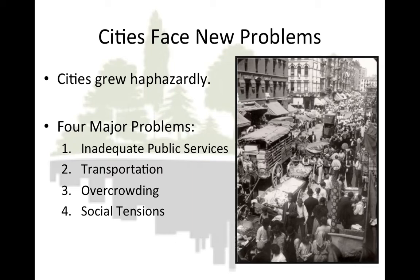Cities faced new problems. Urbanization led to physical changes in the landscape — trees and fields were replaced by wood and brick buildings and paved roads. American cities mushroomed so quickly that city authorities were often unable to deal adequately with all of their problems. Cities grew haphazardly. There were four major problems. First, inadequate public services: cities lacked the ability to deliver increased public services — hospitals, police forces, schools, fire departments, street cleaning, and garbage collection.